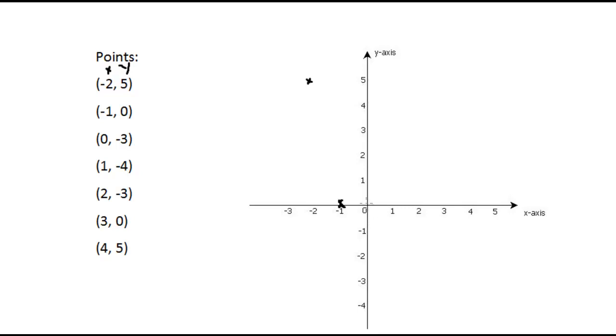And we find 0 and minus 3, that's right here. So 0 on the x axis, minus 3 on the y axis, with an x right there. Then 1 and minus 4, so that's 1 on the x axis, minus 4 on the y axis, with an x right there. Then 2 and minus 3, same procedure, put our x.